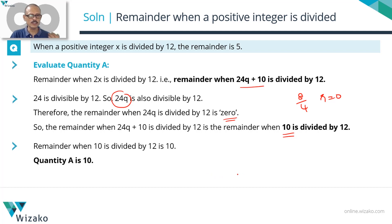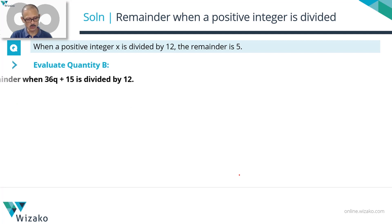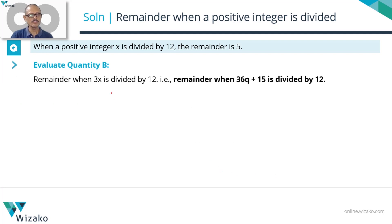Pause the video here, evaluate Quantity B, compare it, and then come back to check whether our methods match. Now let's move on to evaluating Quantity B: the remainder when 3x is divided by 12. We've written 3x as 36q + 15.